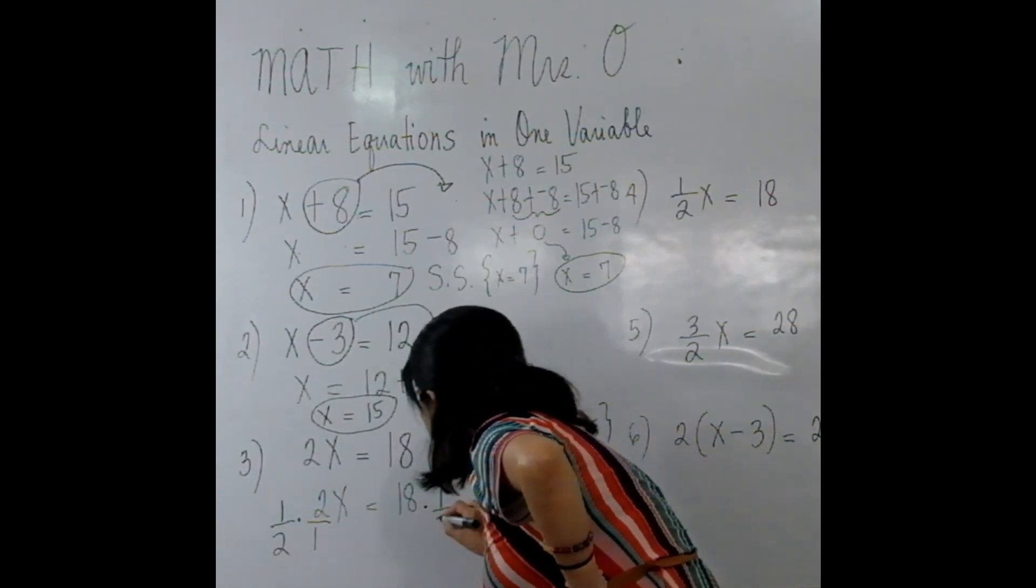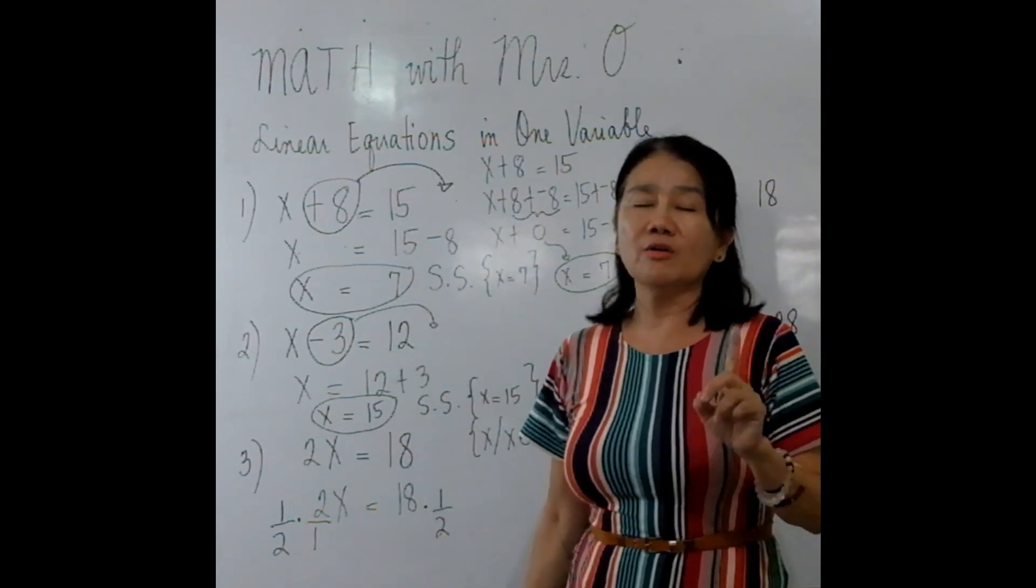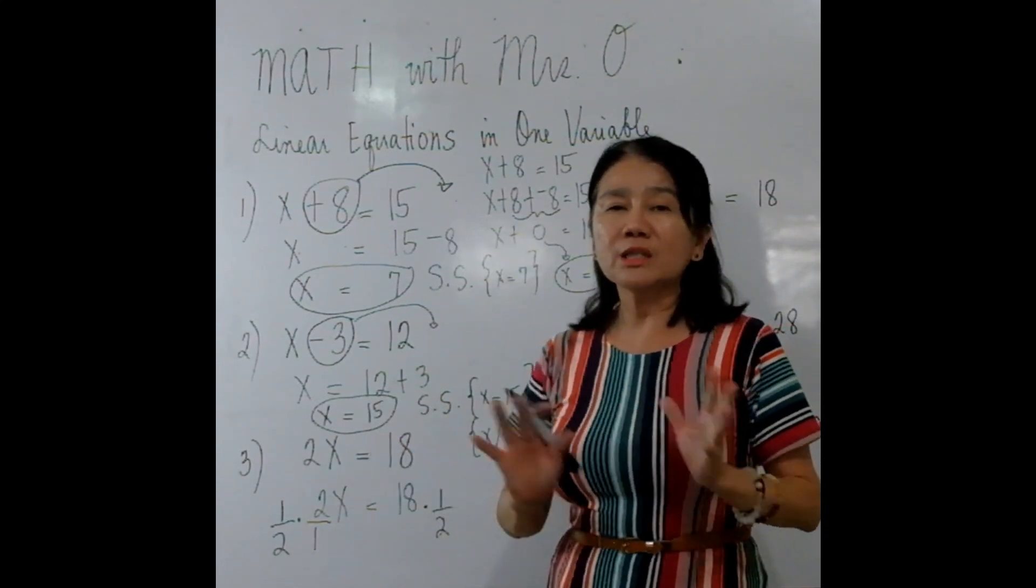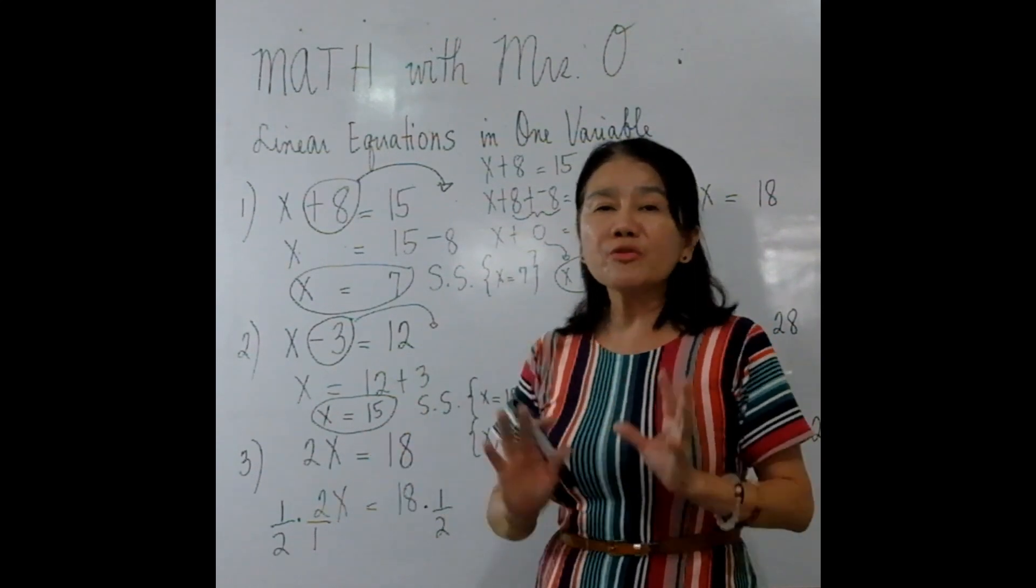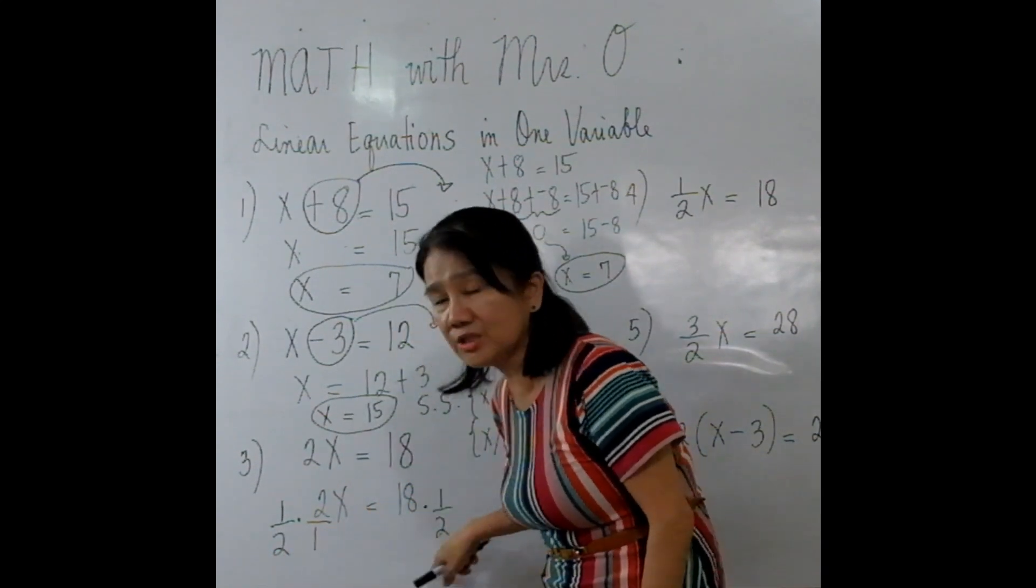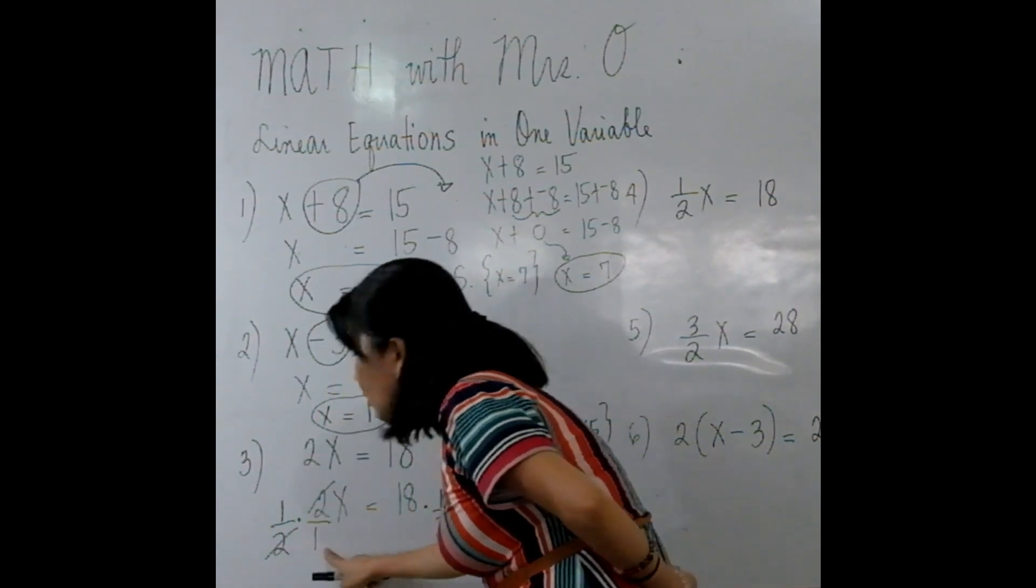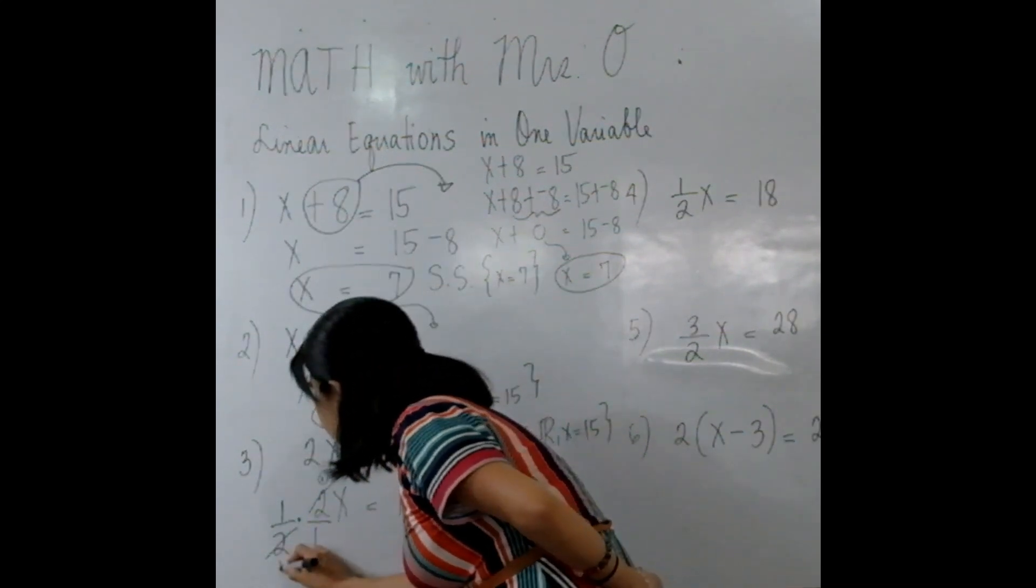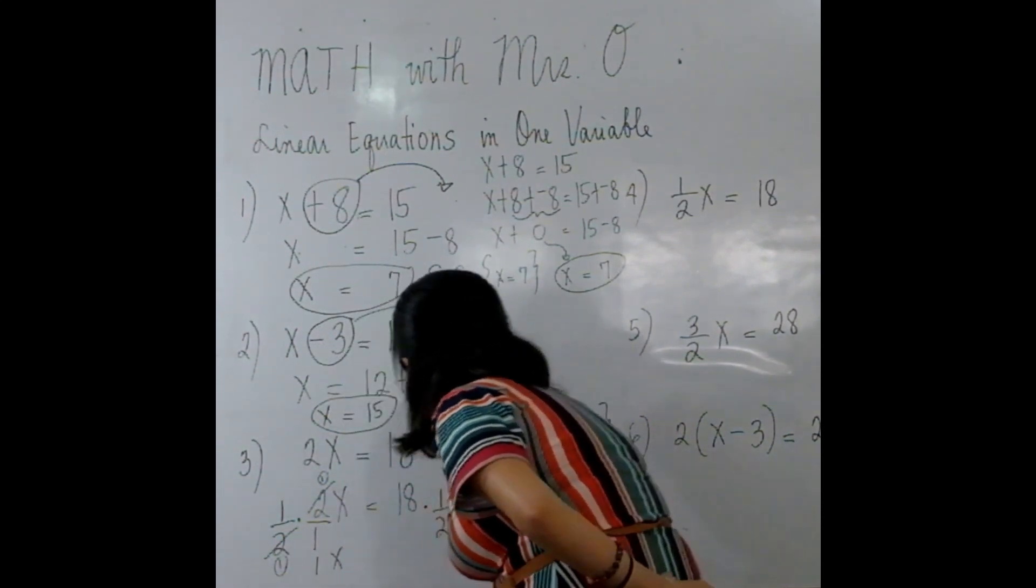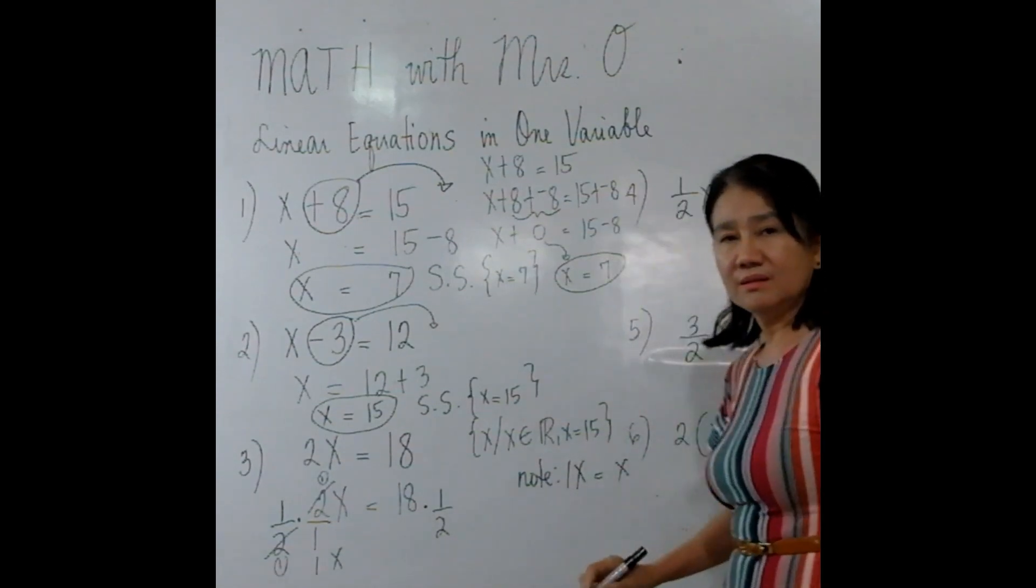So you have to multiply 1 half to both sides. That is the property MPE, or multiplication property of equality, which means that the same number must be multiplied to both sides of an equation. In this case, we multiply 1 half to both sides of an equation. Now you can see that if we multiply 1 half times 2 over 1, you end up with 1. 1 times X is 1X, and we know well that 1X is just X.